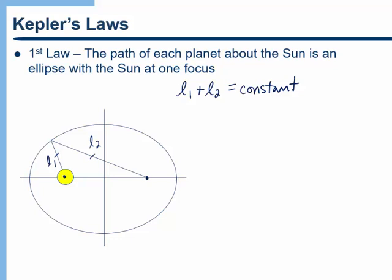Kepler was able to figure out that the planets travel in elliptical orbits about the Sun by looking at data that had been accumulated for many years about the position of the planets in the night sky.